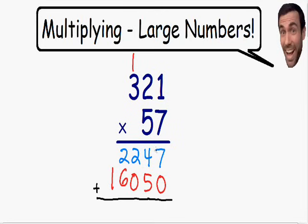Starting on the right, we need to add 7 plus 0. 7 plus 0 is equal to 7. Then we have 4 plus 5 — 4 plus 5 is equal to 9. Then we have 2 plus 0 is equal to 2, and 2 plus 6 is equal to 8. On the left we just have the number 1, so that stays the same. Our final answer is 18,297.